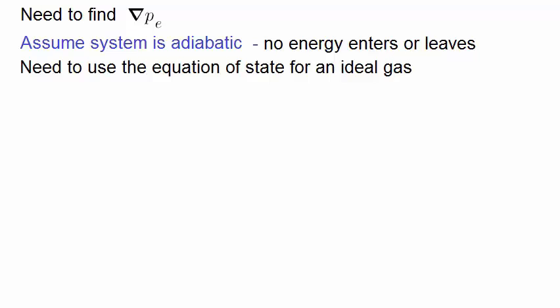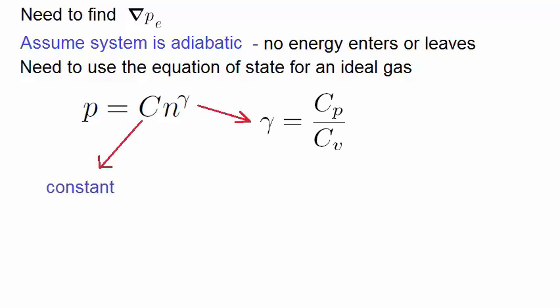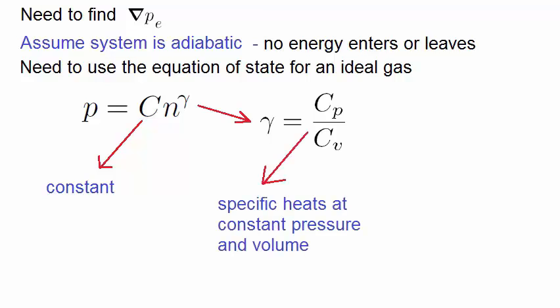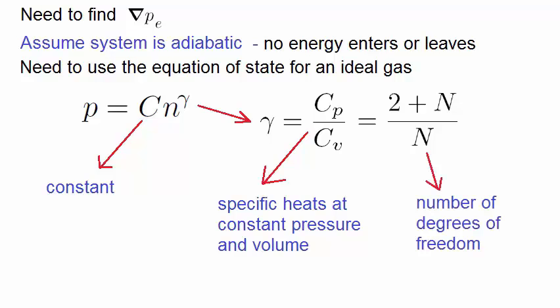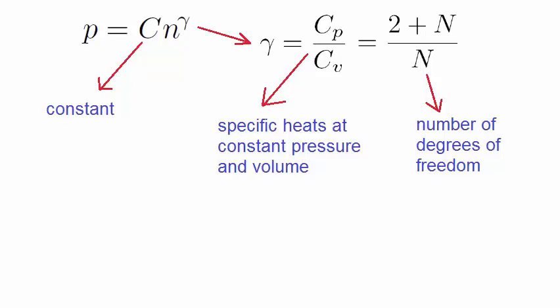Assume that the system is adiabatic, that is, no energy enters or leaves. We use the thermodynamic equation of state for an ideal gas, where C is a constant and Gamma is the ratio of the specific heats at constant pressure and temperature. This ratio can also be given by an expression where N is the number of degrees of freedom. We're going to deal with a one-dimensional case, so N equals 1, which makes Gamma equal 3.